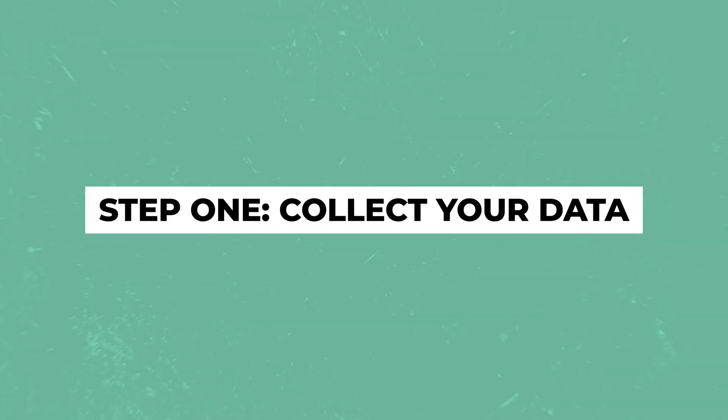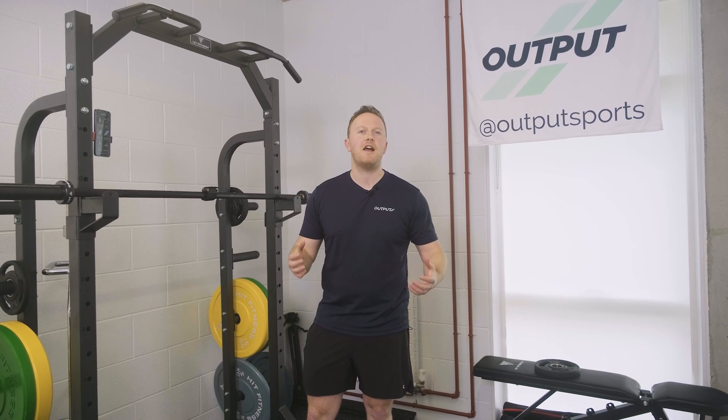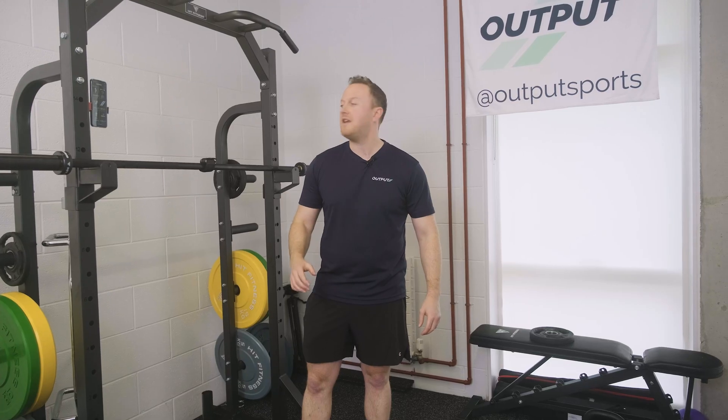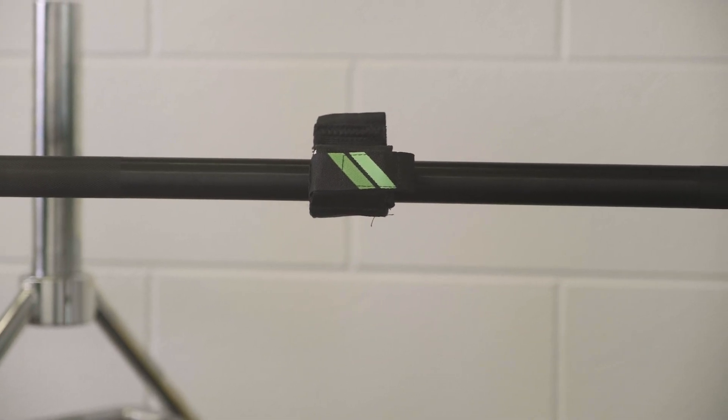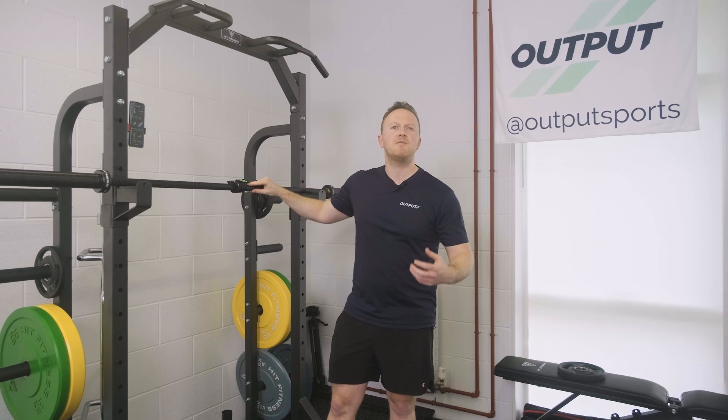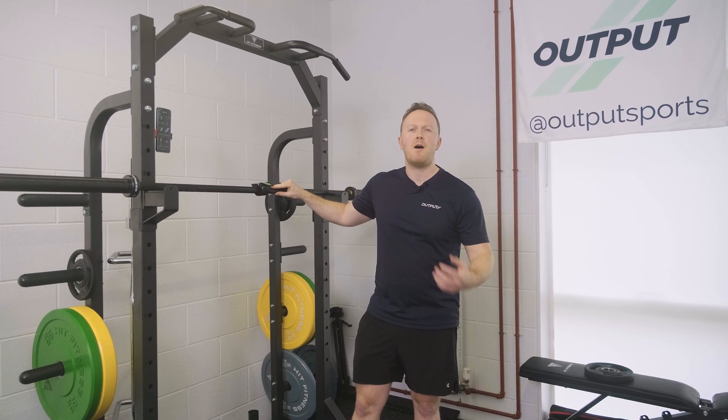Before we jump into capturing my load velocity profile today on the overhead press, you're going to need to check you have some basic kit. For me and for the overhead press, that's this rack, the barbell, and most importantly our velocity-based training tool — in this case the Output Sports unit. It measures a lot of things, but the velocity-based training module is one of our most popular features in Output. Prior to starting, I'm going to make sure my shoulders and triceps are warmed up to be safe and consistently ready for capturing this profile.